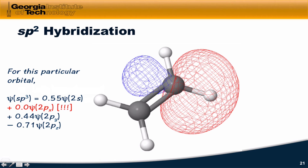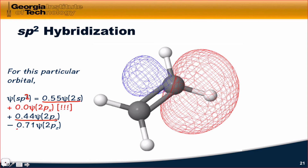Looking at actual calculation results for the SP2 hybrid — note that this is an SP2 — the wave function contains a little bit of the 2s, a little bit of one of the 2p's, and a little bit of another 2p. But one of the 2p orbitals is not involved at all; the coefficient is 0.0. So what we're getting is a mixture of only the 2s and 2 of the p orbitals, with the third p orbital not involved in hybridization at all. We'll talk about the role of that third p orbital at the end of this video.